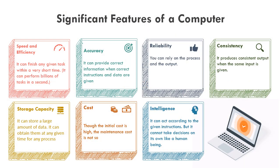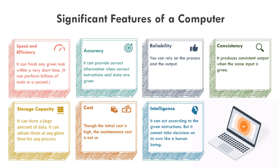Let's see the significant features of a computer. Speed and efficiency — it means finishing any given task within a very short time. Accuracy — it can provide correct information when correct instructions and data are given.